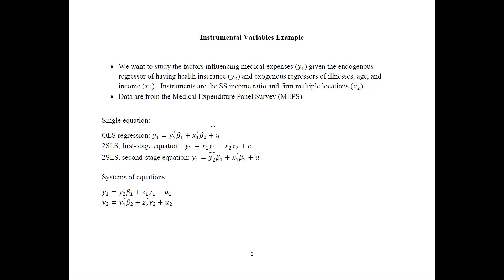These are the equations that we would be estimating. If we are only interested in medical expenses, we have a single equation and we could estimate this with OLS — regressing medical expenses on health insurance and the exogenous variables. For two-stage least squares, instead of using the endogenous variable directly, we regress it on the exogenous variables and instruments to get predicted values, then use those in the second step. That is the difference between OLS and two-stage least squares.